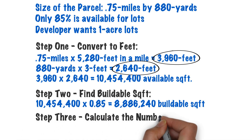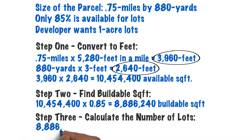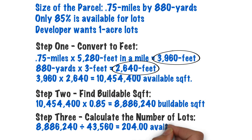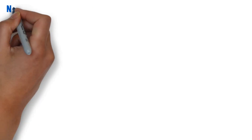Now to determine the number of lots: we know he wants one-acre lots, so all we do is divide that number by 43,560 to get 204 available lots.